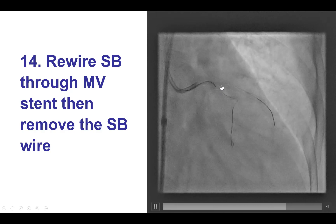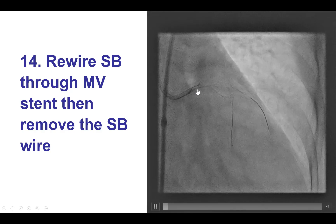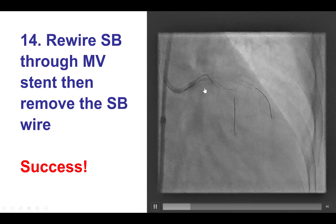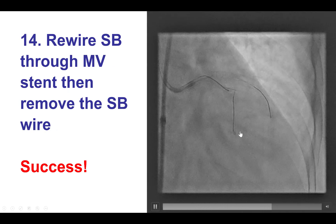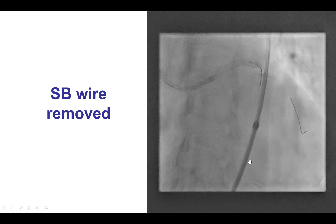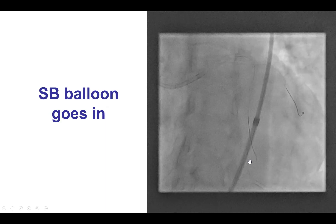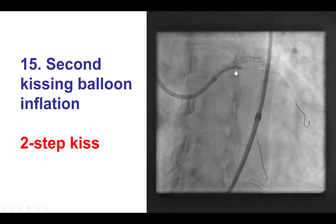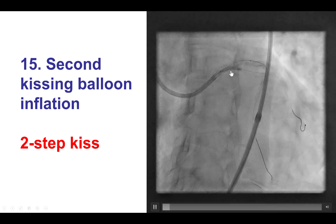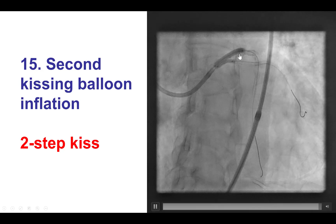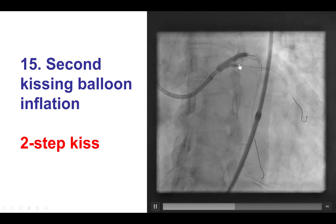Most people don't like to jail the wire, but in this case we did jail it and it helps determine which direction to go. After manipulation, we were able to advance a second wire that tracked along the first guide wire, and then we removed the jailed wire. It was then time to perform the second kissing balloon inflation. The balloon went in very easily. We performed the two-step kiss, which involves first a high-pressure inflation in the side branch to fully open the stent struts, and then a simultaneous inflation in both the main vessel and the side branch.